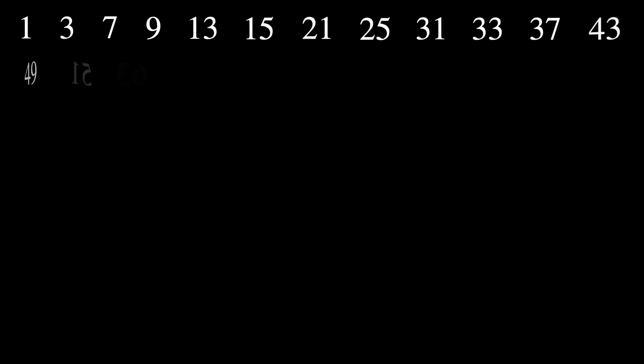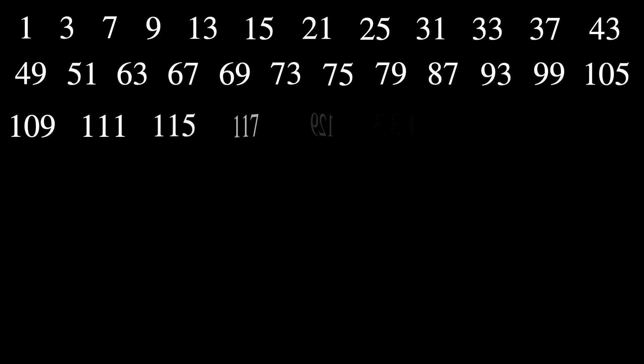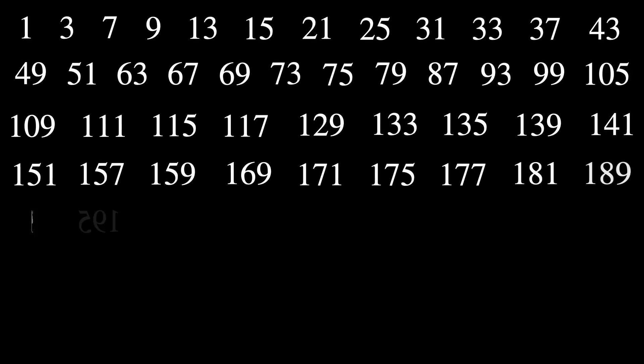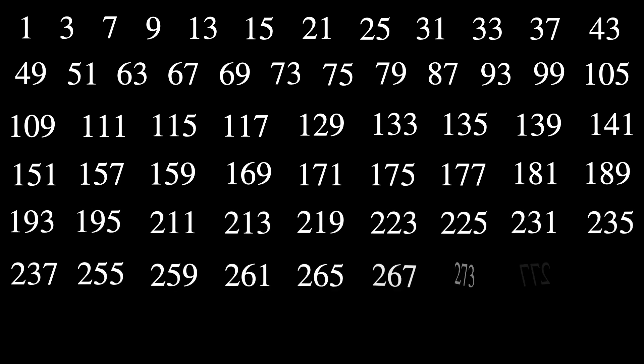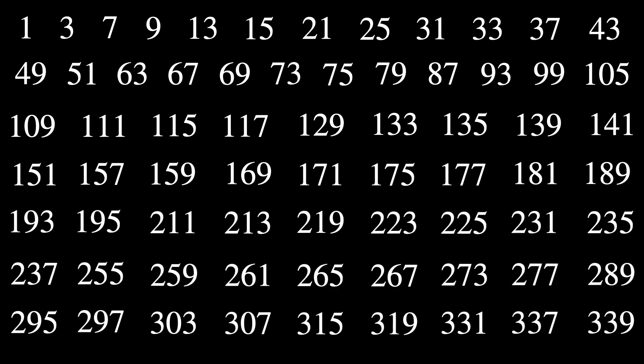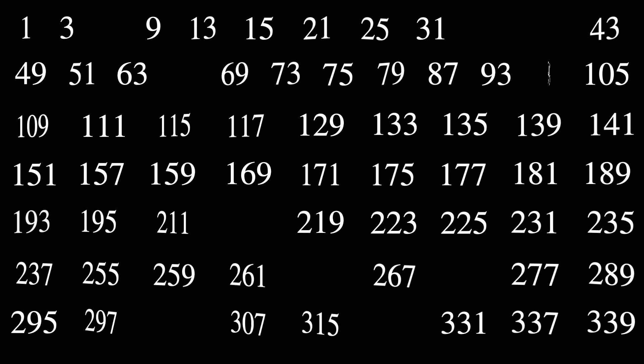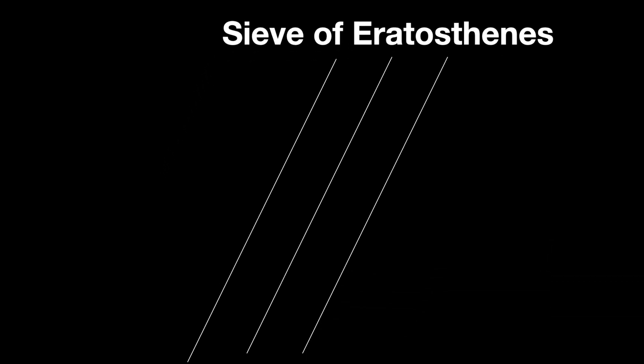Before explaining what lucky numbers are and how they're found, what was needed for the concept to be developed? The process of generating lucky numbers closely mirrors the sieve methods used in number theory — most notably, the Sieve of Eratosthenes, which is used to find prime numbers.